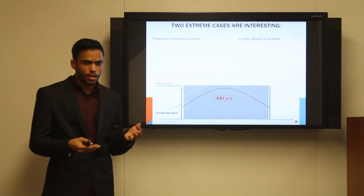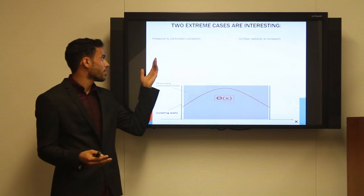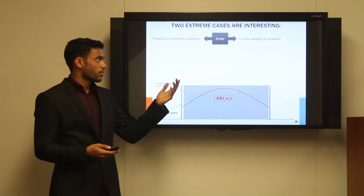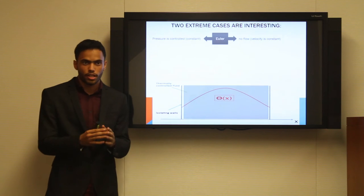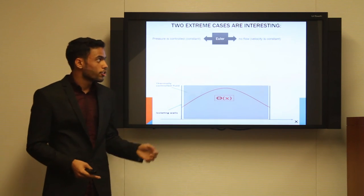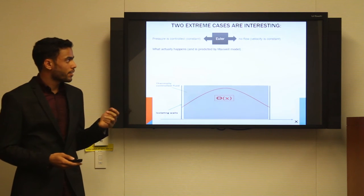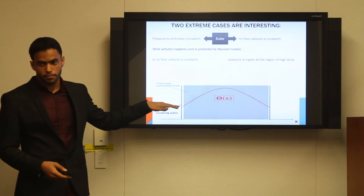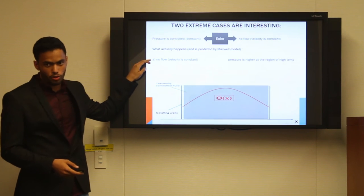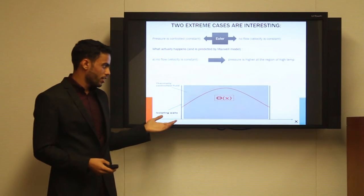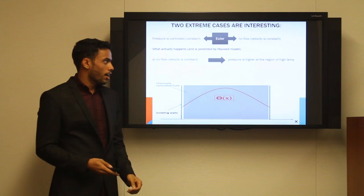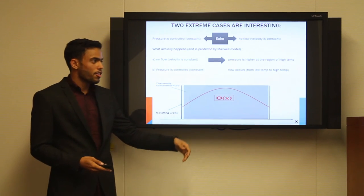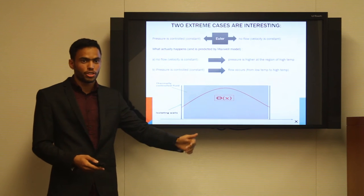According to Euler equation, if you have such situation that the pressure is constant, then obviously there is no flow, and vice versa. If you have no flow, that means according to Euler equation that the pressure is constant everywhere. These two statements are interchangeable. But what actually happens, and is predicted exactly by Maxwell model, is that if there were to be no flow, this means that the pressure is higher in the region of high temperature. And the other case would be that if pressure is constant everywhere, then there will be a flow from the region of low temperature to the region of high temperature.